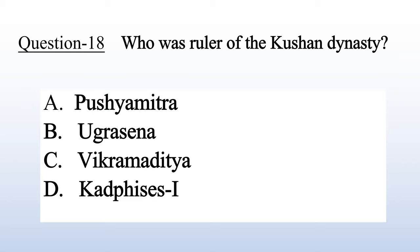Question 22: Who was the ruler of the Kushana dynasty? A. Pushyamitra, B. Ugrasena, C. Vikramaditya, D. Kadphises I. Answer is D: Kadphises I.